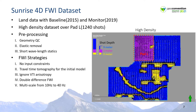This required a lot of QC work up front by the processor Geotomo. Also, we did not provide any initial constraints to the FWI processing such as a starting velocity model or by fixing certain layers. We've listed here some of the pre-processing steps that were used and also some of the strategies employed while processing the FWI volumes.